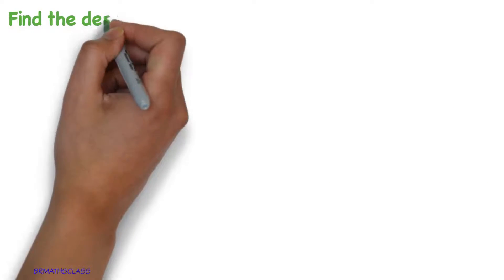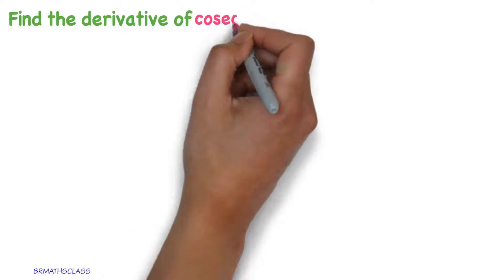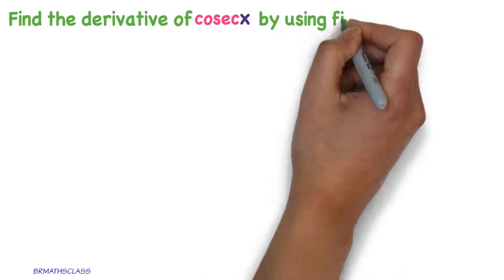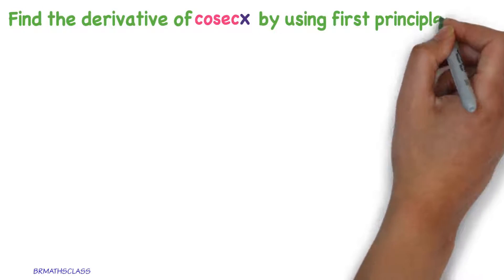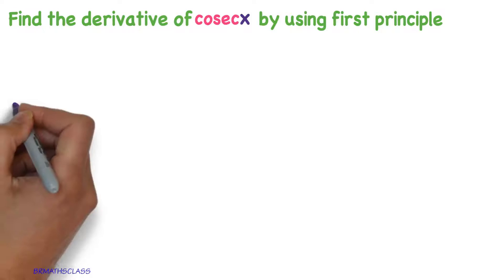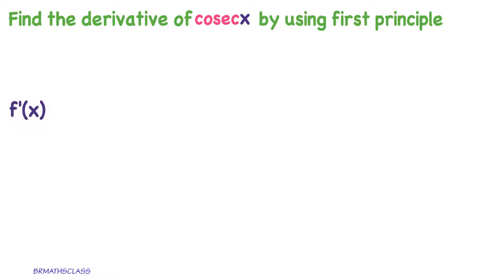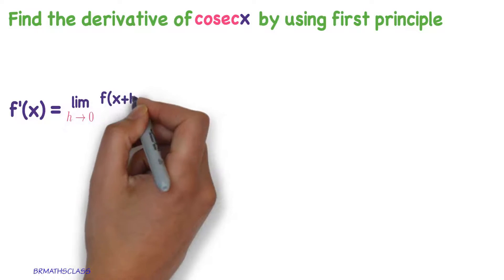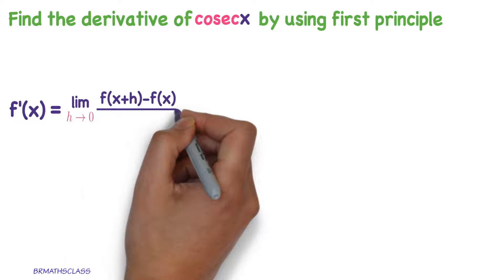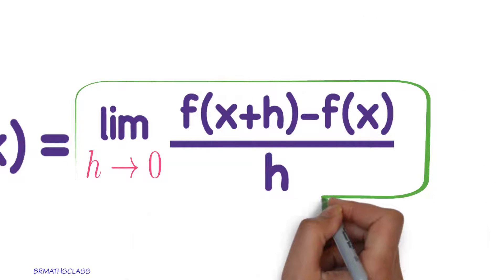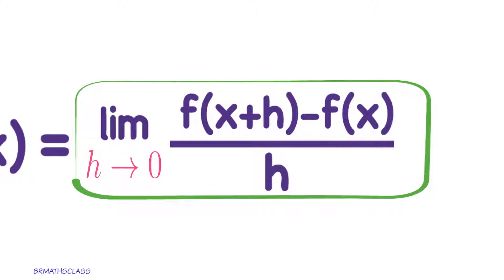Find the derivative of cosecant x by using first principle. We know what is first principle of derivative. First principle of derivative is f dash of x equals limit h tends to 0, f of x plus h minus f of x divided by h. This expression is called first principle of derivative.